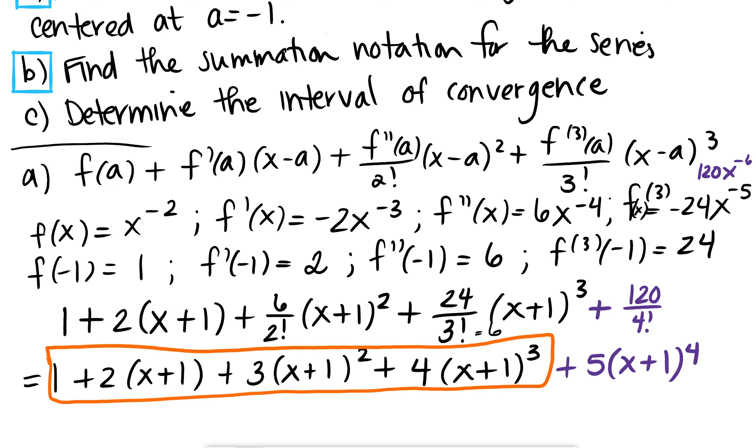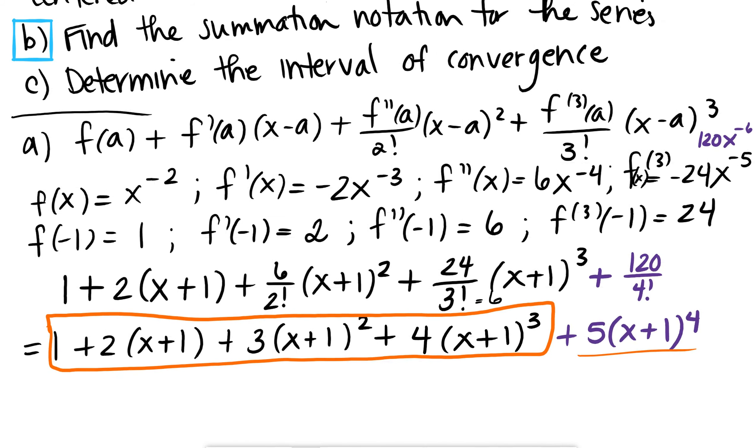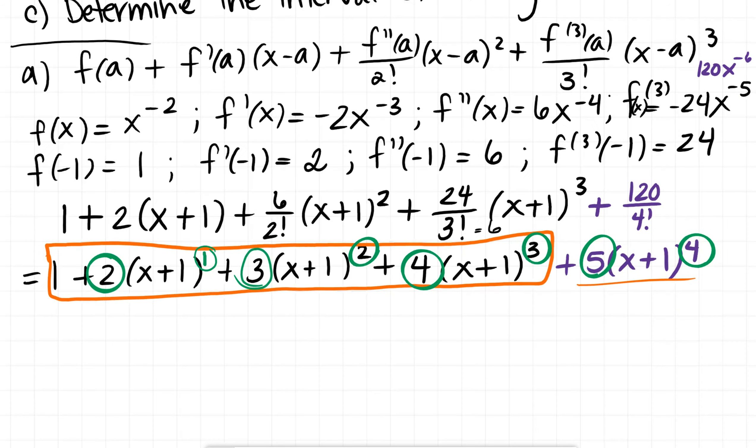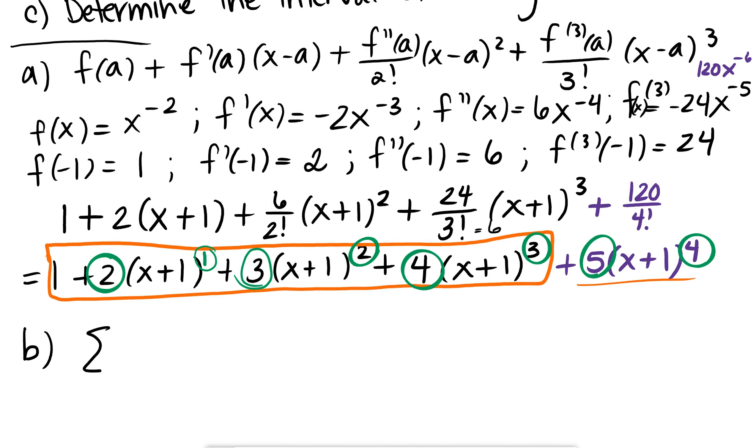So those are my first four terms, and I would, of course, if I were to write down my final answer, I would simplify that 6 over 2 factorial and that 24 over 3 factorial. I think, actually, man, I'm noticing a pretty cool pattern here. I've actually done this problem, but 2 factorial is just 2, so this is 3 times x plus 1 squared. And then 24, so 3 factorial is 3 times 2 times 1, which is 6. 24 divided by 6 is 4, plus x plus 1 cubed.